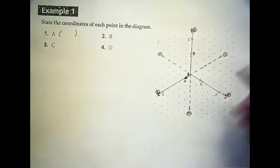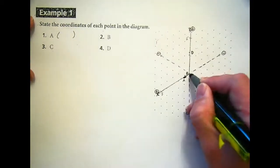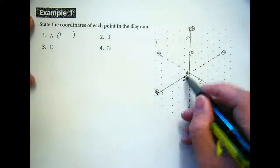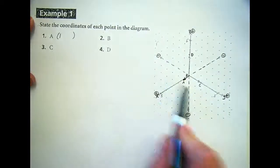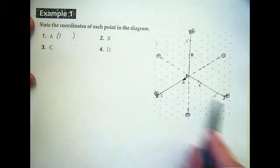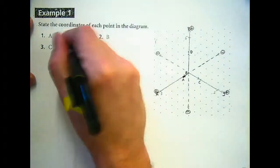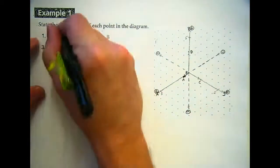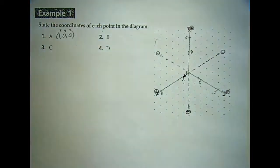So we have x, y, and z. Point A on the x-axis — if we're at the origin and we move this way, we're at 1. Did we go parallel to the y-axis? No. Did we move up or down? No. So since we didn't move with the y-axis, that's zero, and we didn't move up or down, that's zero. So that's an ordered triple: 1, 0, 0. It's very similar to x, y — but this is x, y, z.